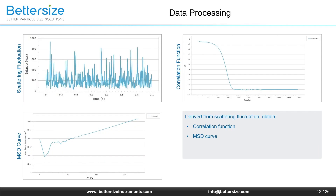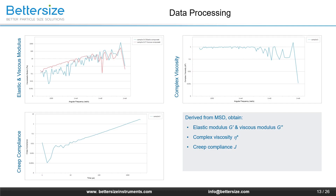Looking at the data processing of the B-nano series: DLS microrheology measures the scattering fluctuations, from which the correlation function and the MSD curve are derived. From the MSD curve, we can obtain rheological information such as elastic modulus G-prime, viscous modulus G-double-prime, complex viscosity Eta-star, and creep compliance J.